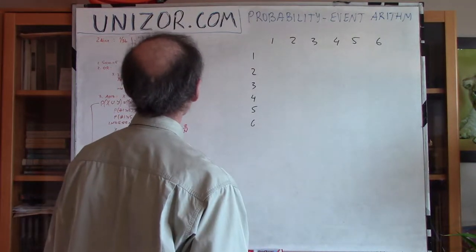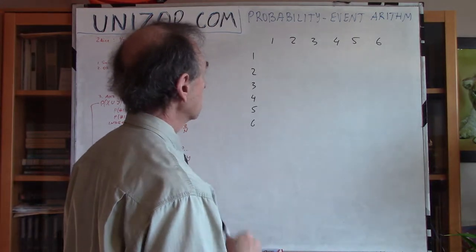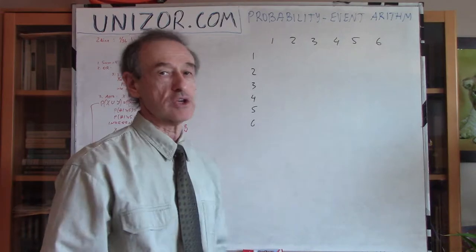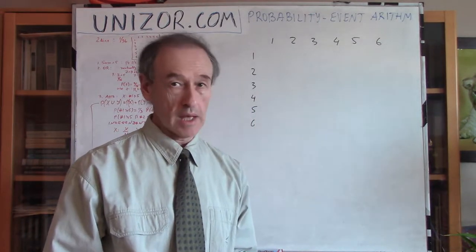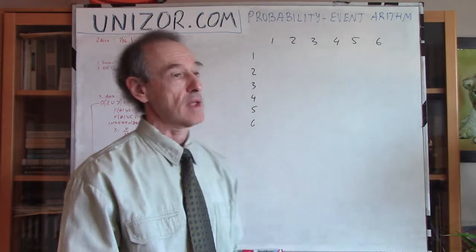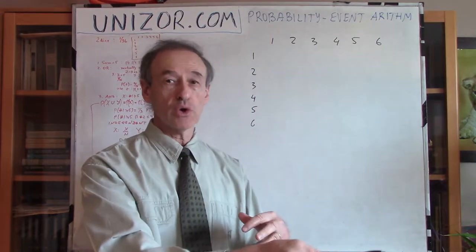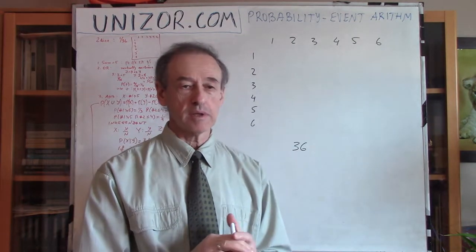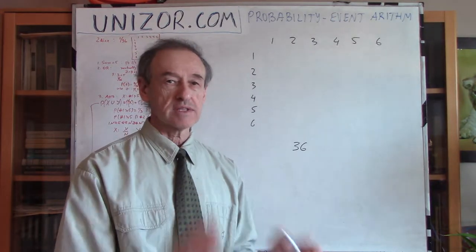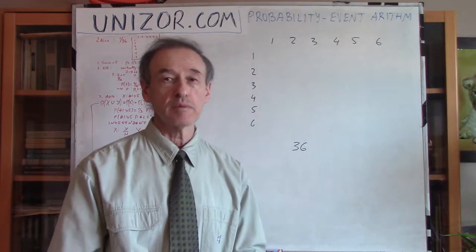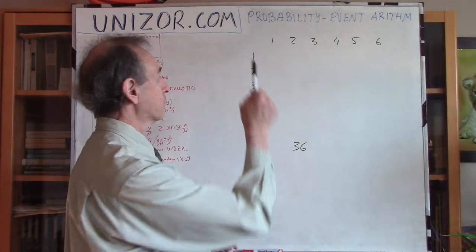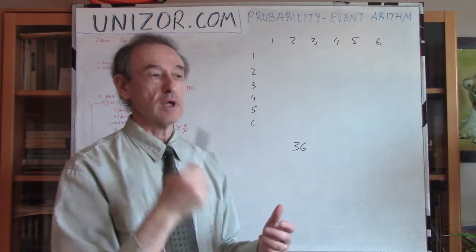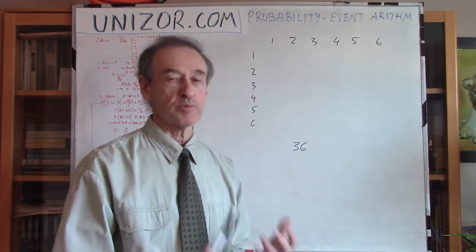The sample space is obviously all the different combinations of the first and second dice. We have six outcomes for one and six for another, so we have 36 different combinations. Assuming the experiment is ideal and all combinations have exactly the same probability, each elementary event — for example, the first die shows two and the second shows five — has a probability of 1/36.